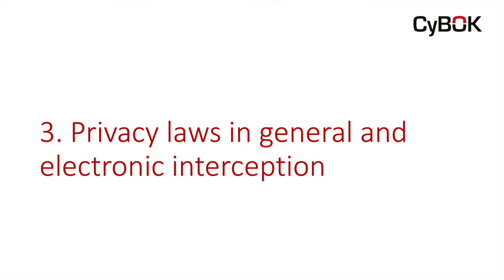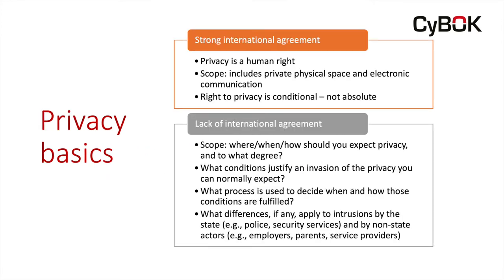Let's turn briefly to privacy laws in general and electronic interception. There are some issues in privacy law that are agreed internationally and widely accepted by states around the world. The first is that privacy is a human right. There seems to be widespread agreement that privacy includes privacy in electronic communications — as recently as 30 to 50 years ago that wasn't the case, but it is now widely accepted. What is also widely accepted — and practitioners don't always appreciate this — is that the right to privacy is conditional, not absolute.